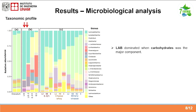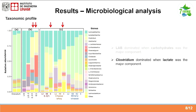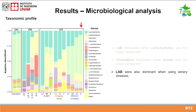In the microbiological analysis, we are observing the inoculum and some of the conditions of the synthetic substrates. What we observed was, first, that lactic acid bacteria dominated when carbohydrates were the major component. When lactate was the major component, Clostridium was the genus that dominated the microbial community. In the special case of winery vinasses, where we observed a lower hydrogen potential, lactic acid bacteria were also dominant, which may explain part of the lower hydrogen potential obtained.